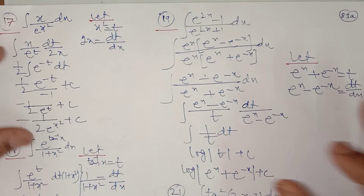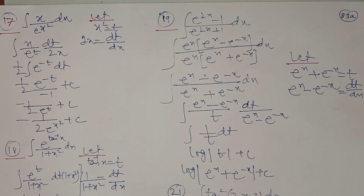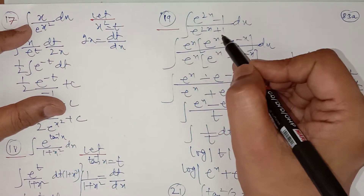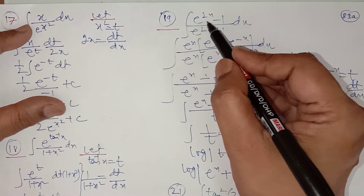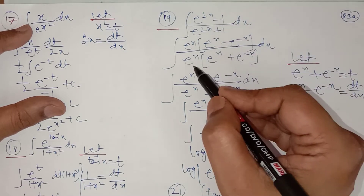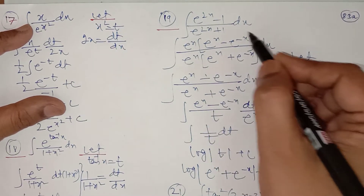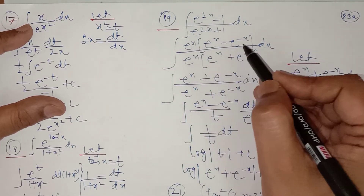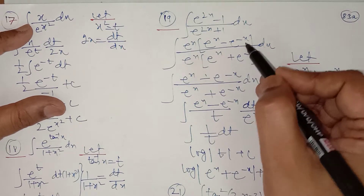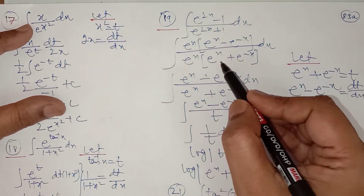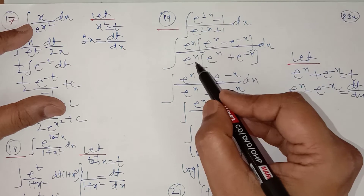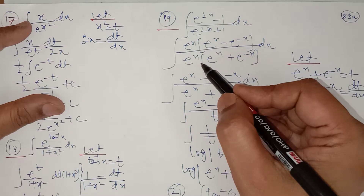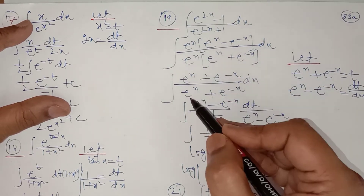Question number 19 is somewhat tricky. For (e to the power 2x minus 1) upon (e to the power 2x plus 1), take e to the power x common in the numerator and e to the power x common in the denominator. See this step carefully: e to the power x times e to the power minus x equals e to the power 0 which is 1. So e to the power x is taken common in both numerator and denominator and will be cancelled out.